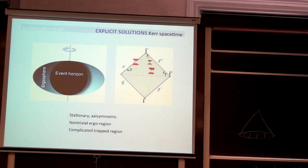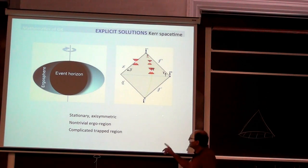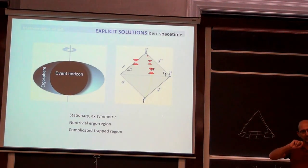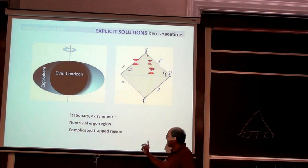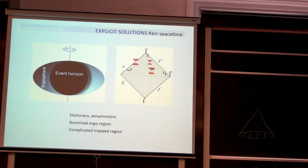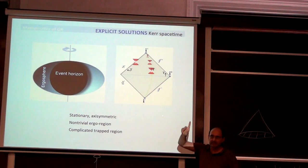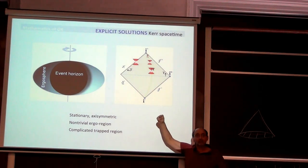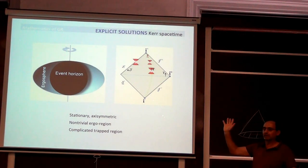In the exterior region of the Kerr solution, the solution is stationary but not static. The vector field d/dt is not orthogonal to t equals constant hypersurfaces. The solution is axisymmetric. Something new compared to Schwarzschild: the Killing vector field T equals d/dt starts out timelike at infinity, but as you approach the horizon it becomes spacelike. The transition region is called the ergo region.